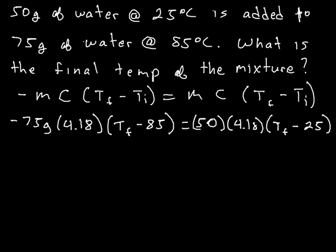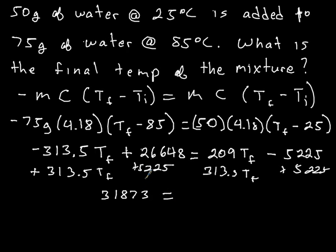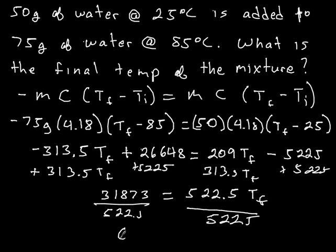Now, this is just an algebraic solution at this point. 75 times 4.18. And then distribute that to the Tf and the negative 85. 50 times 4.18. Distribute that. Group your terms. When you distribute, you get this. Now, you're going to group your terms. It would be easiest to add the 313.5 to both sides. And then add the 52.25 to both sides. And then divide by your 5.22.